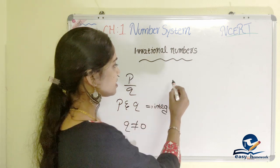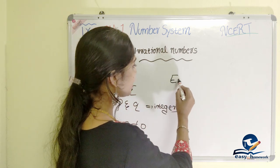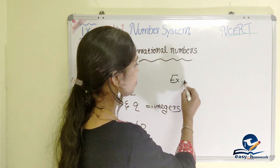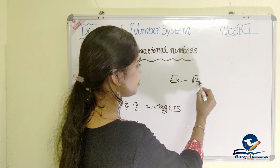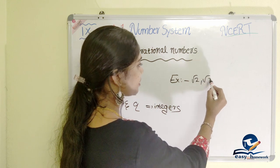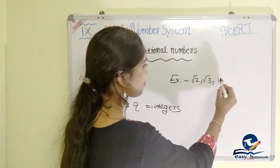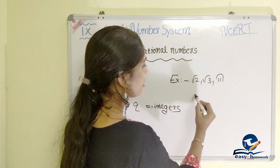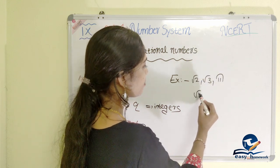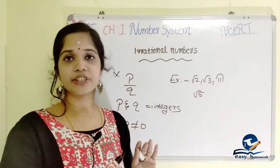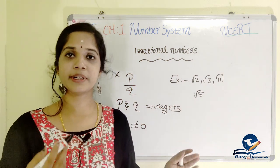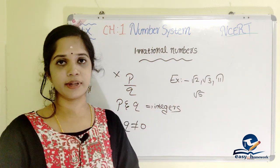We are going to study examples of irrational numbers. What do we mean? Examples include root 2, root 3, and root 5. We are going to study these examples of irrational numbers.